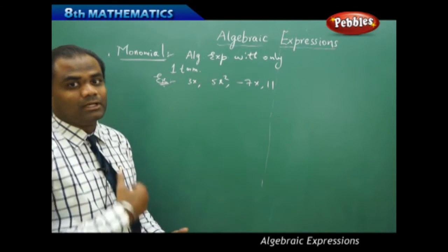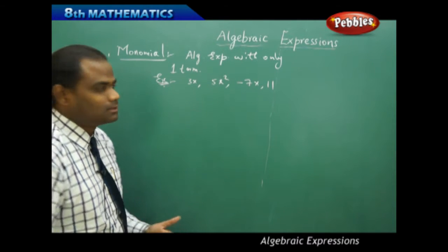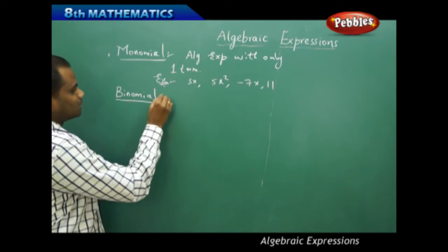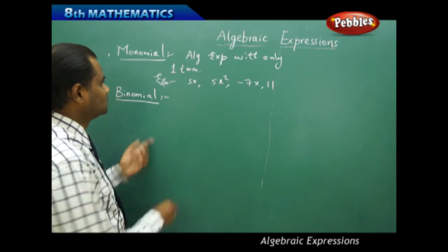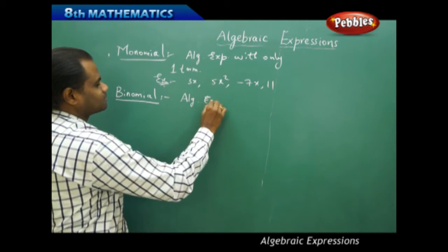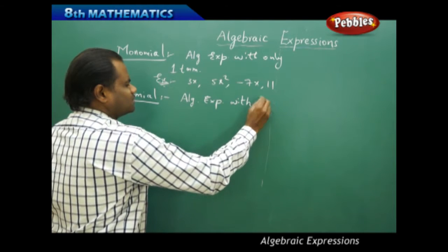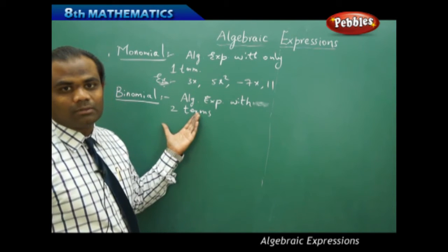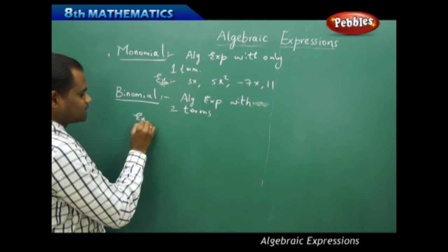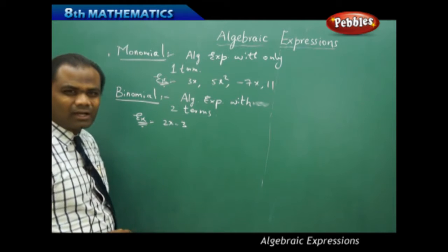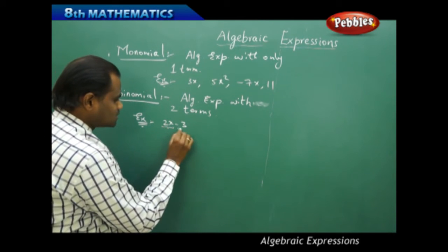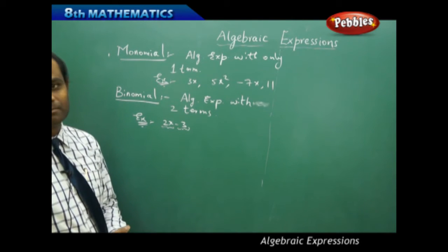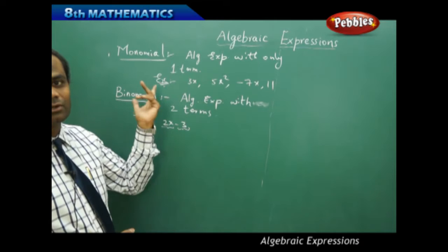Next is a binomial — an algebraic expression with two terms. So we have monomial, then binomial, then trinomial and so on. A binomial is an algebraic expression with two terms. For example, 2x minus 3 has two terms: 2x and negative 3. The combination of two terms written in an expression form is called a binomial expression. An expression with only one term is a monomial.